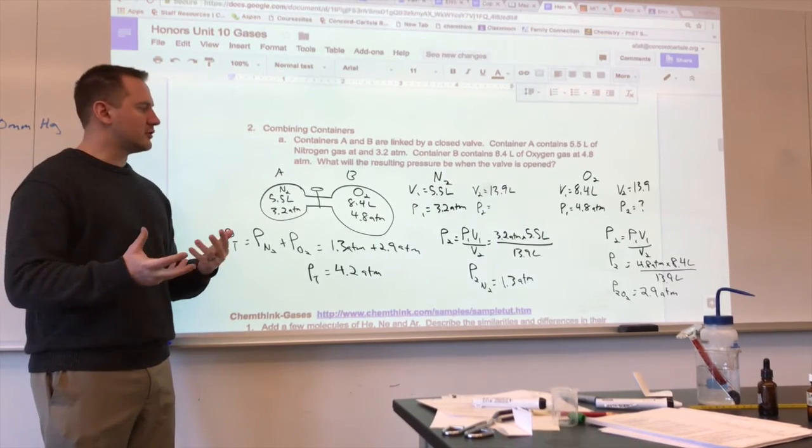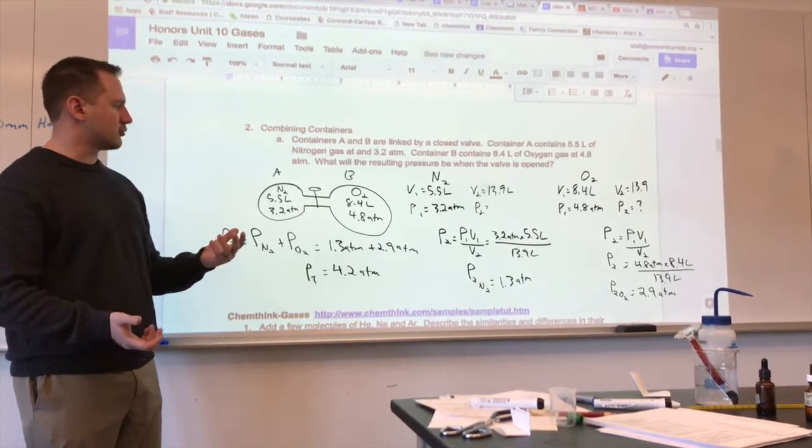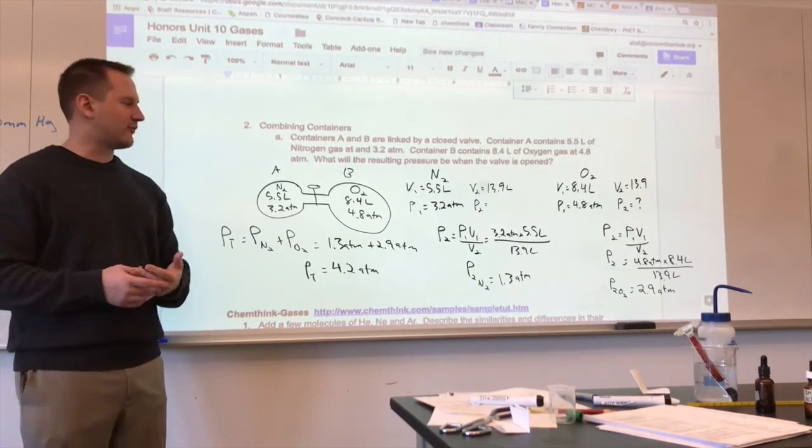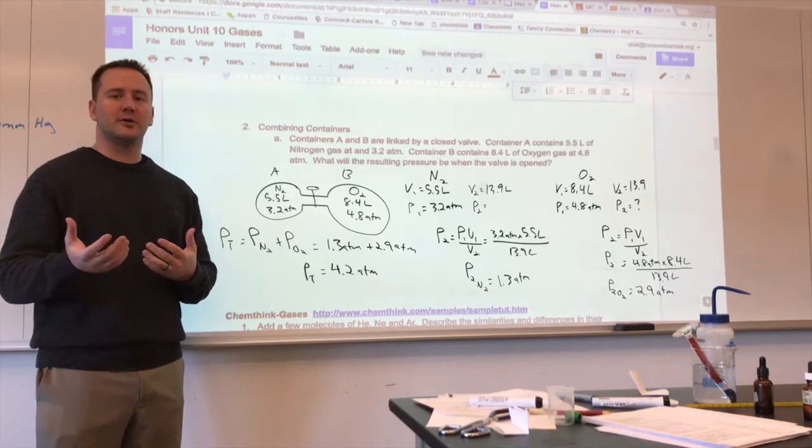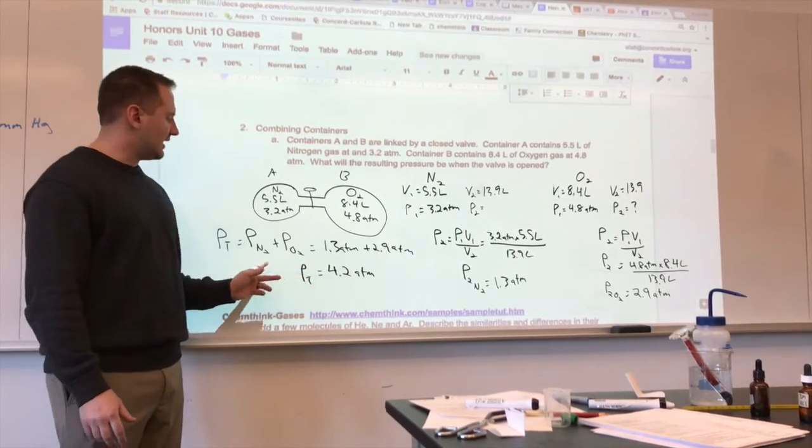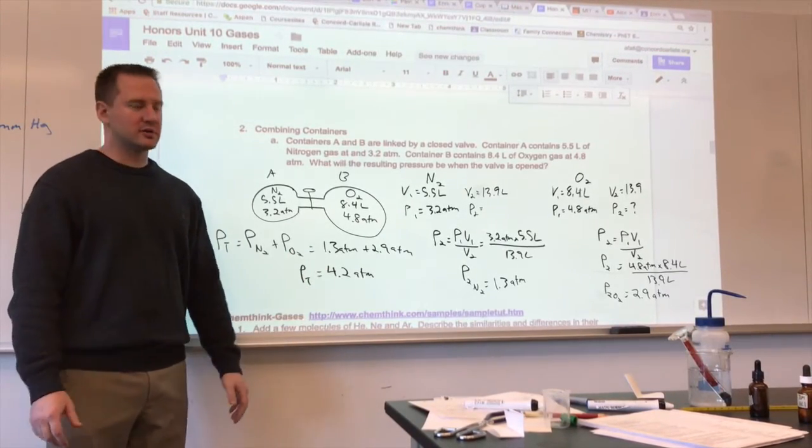What we're going to do is treat this like a Boyle's Law problem, where we have an initial pressure and volume, and we have a final volume over which they're expanded. We're going to determine the final pressure for each of these gases, and then add them together to get the total pressure in the container.